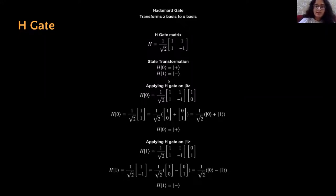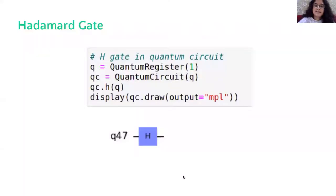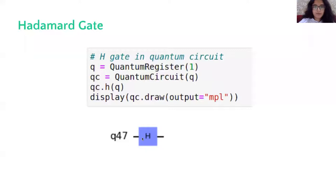When applied on ket1, it gives ket minus as the calculations show. We can implement it using Qiskit: we take one quantum register for this single qubit gate, pass it to the quantum circuit, then apply the H gate on the single qubit Q using the function H with parameter Q. The display function allows us to view the quantum circuit.